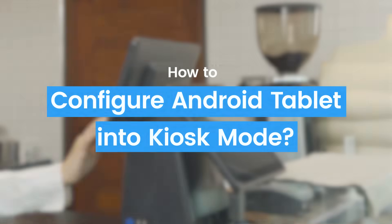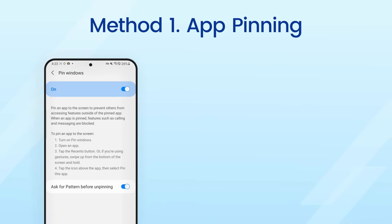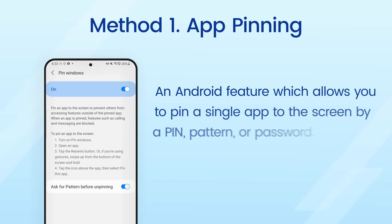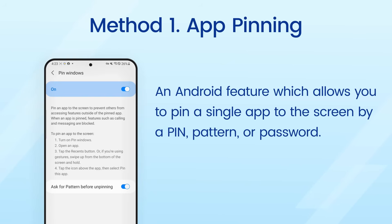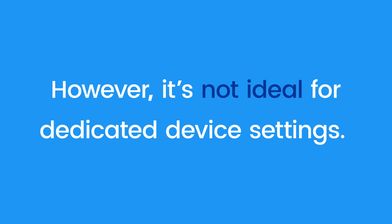The simple way to set up Android tablet kiosk mode is by using an Android feature called app pinning. This feature allows you to pin a single app to the screen, which can be locked behind a PIN, pattern, or password to secure the device and prevent users from bypassing it.